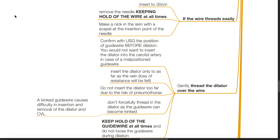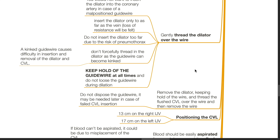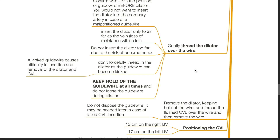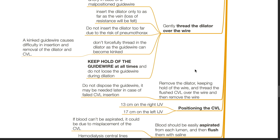Do not forcefully thread in the dilator as the guide wire can become kinked, causing difficulty in insertion and removal of the dilator and CVL. A possible reason for difficulty in dilation is the toughness of the skin and subcutaneous tissue, which can be solved by incision with the scalpel. Keep hold of the guide wire at all times and do not lose it during dilation. Remove the dilator while keeping hold of the wire, then thread the flushed CVL over the wire and remove the wire. Do not dispose of the guide wire as it may be needed later in case of a failed CVL insertion.